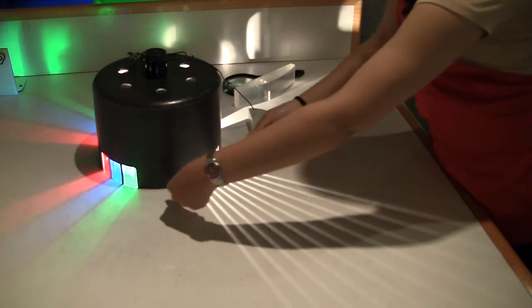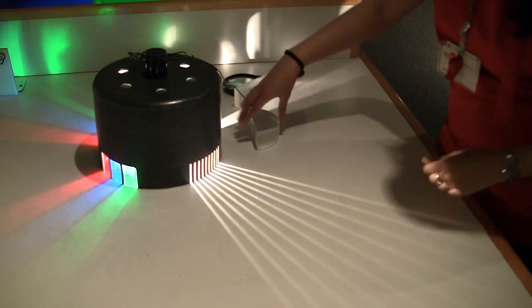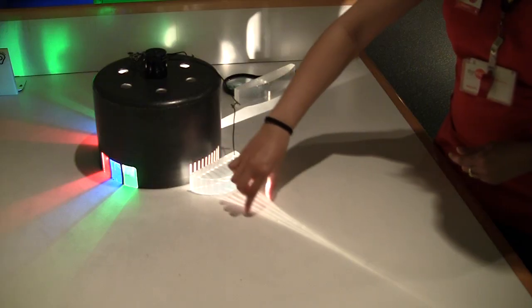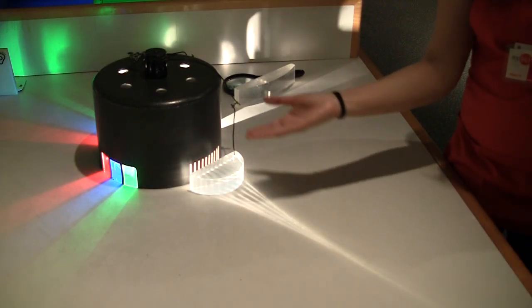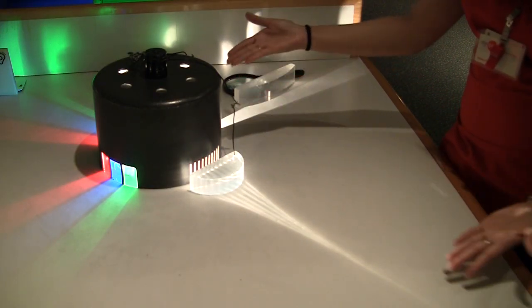Let's see that again. The light was spread out and now it's focused. When the light passes through this lens, it refracts towards the center, focusing the light to a smaller area. This is why lenses are useful.